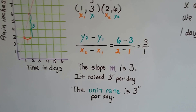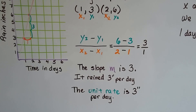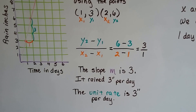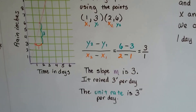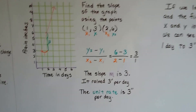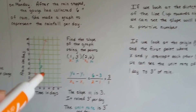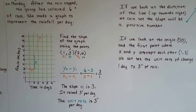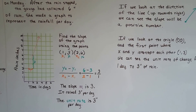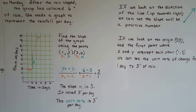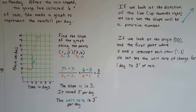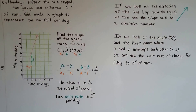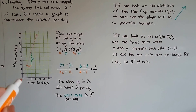It rained three inches per day — the unit rate is three inches per day. If we look at the direction of the line, it's heading up to the right, so we can see the slope is going to be a positive number.